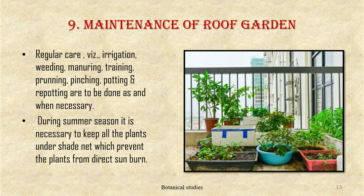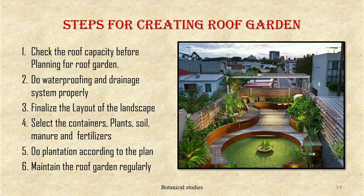During summer it is necessary to keep all plants under a shade net to prevent direct sunburn. Steps for creating a roof garden: check the roof capacity before planning, do waterproofing and drainage properly, finalize the landscape layout, select containers, plants, soil, manures and fertilizers, do plantation according to the plan, and maintain the roof garden regularly. This is all about the roof garden.